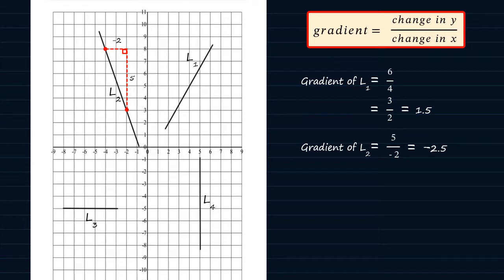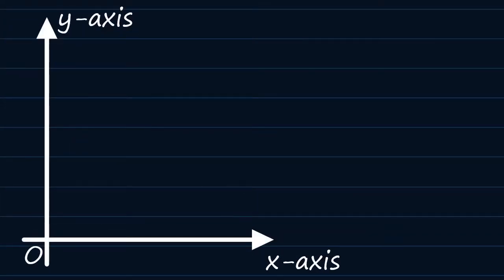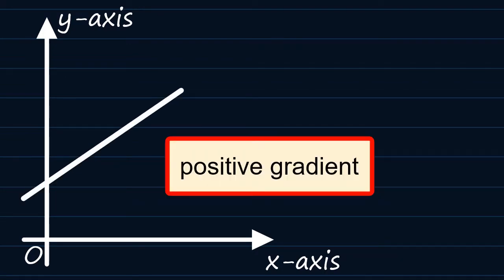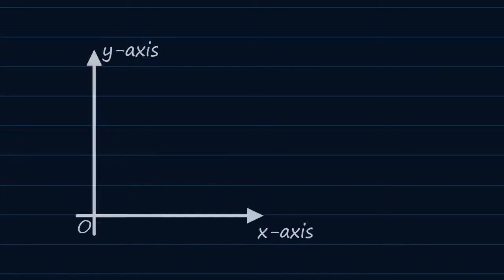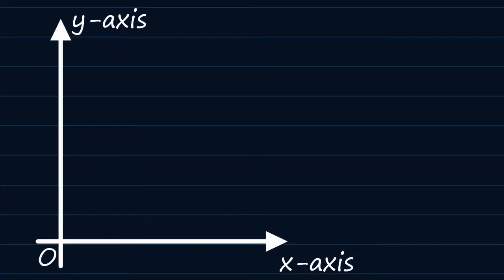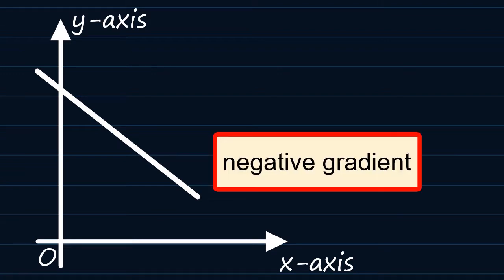At this juncture, I would want you to take note of the following facts. If you have a straight line that has an upward slope like this one, then the gradient of that line is always going to be positive. And for a graph that is a downward slope like the one here, the gradient is always going to be negative.